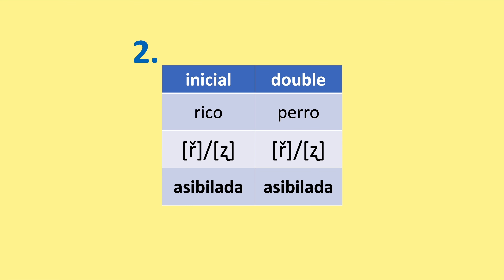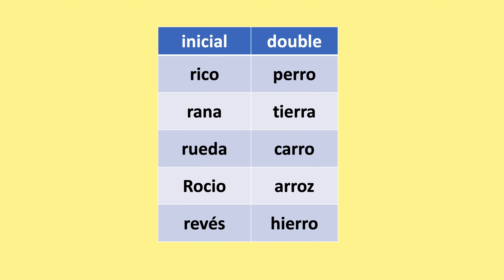The second type of R is the asibilada. This sound can be found in many regions of Latin America. It sounds like this: zhi. Here are some examples: rico, rana, rueda, rocío, revés, perro, tierra, carro, arroz.